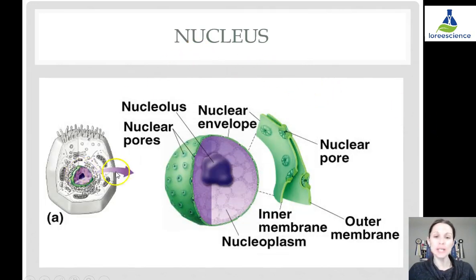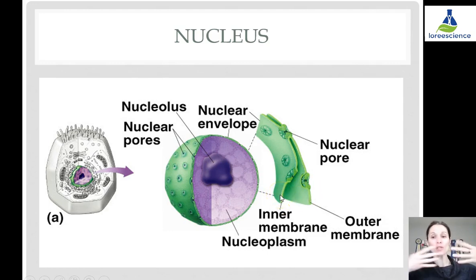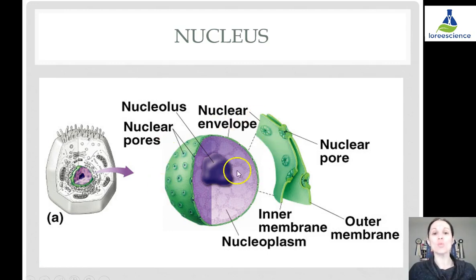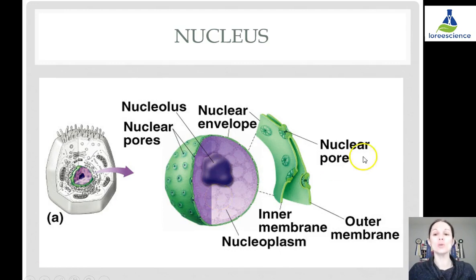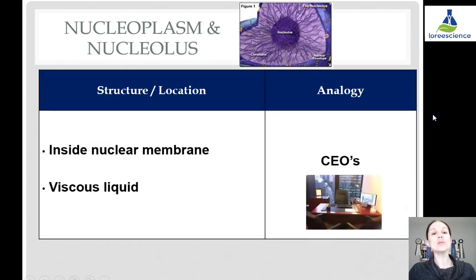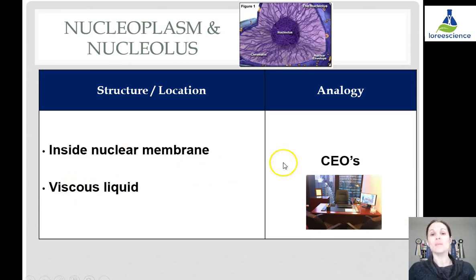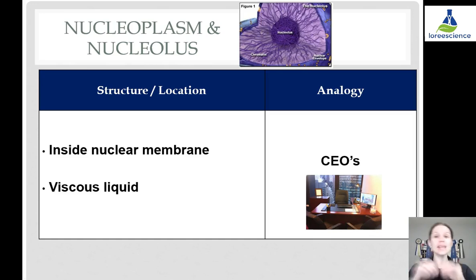If we blow up the nucleus, we have the nuclear envelope or nuclear membrane, which has an inner layer and an outer layer. The inner membrane has those phospholipids coming together, and so does the outer membrane. The nucleolus is inside the nucleus, and it's filled with its own type of cytoplasm called nucleoplasm. The nucleoplasm is a viscous liquid similar to cytoplasm but inside the nucleus. In our analogy, these are like the CEOs — what's actually inside those executive offices — and they can move around within the offices but don't leave them.